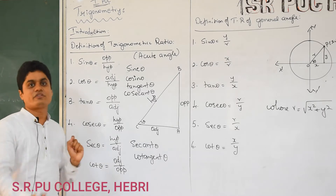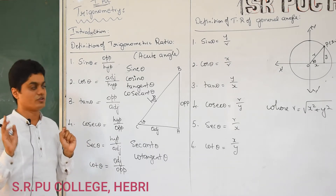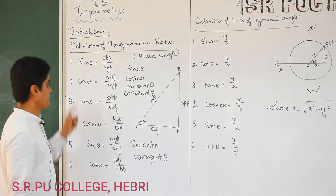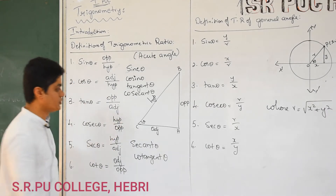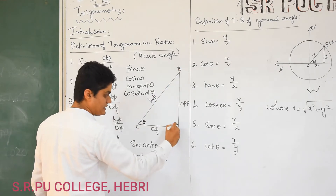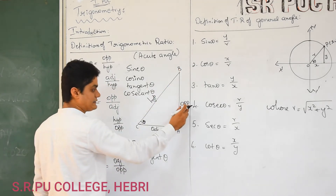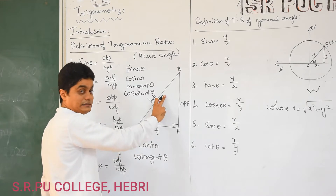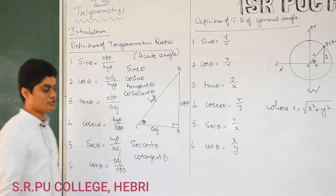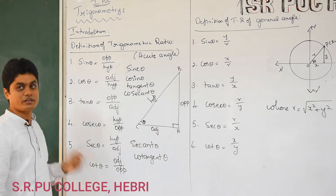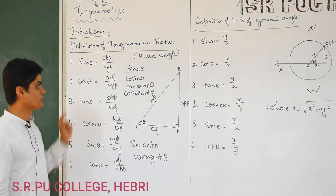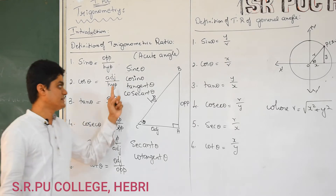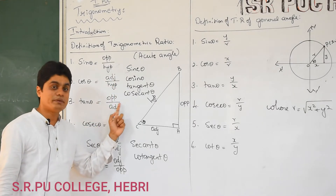It is not enough to know which are the six trigonometric ratios — you should also know their definitions. There are two different definitions. One you studied in 10th standard. For sin theta, if theta is an acute angle, consider one right angle triangle. The side opposite to the angle is the opposite side, the side adjacent to the angle is the adjacent side, and the side opposite to 90 degrees is called the hypotenuse. Using these three sides, you can define the trigonometric ratios. Sin theta equals opposite by hypotenuse. Cos theta equals adjacent by hypotenuse. Tan theta equals opposite by adjacent.